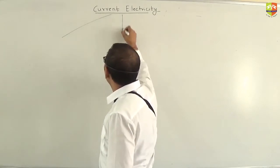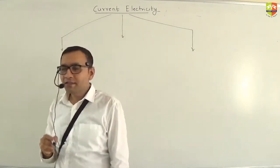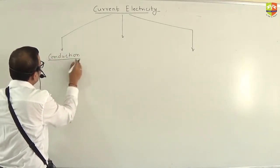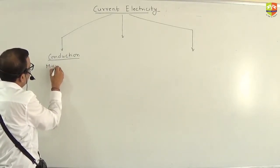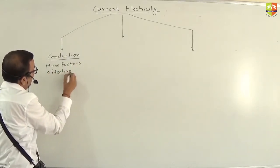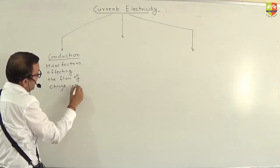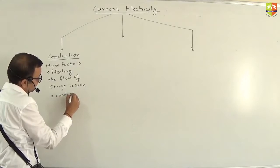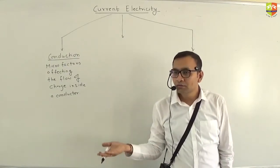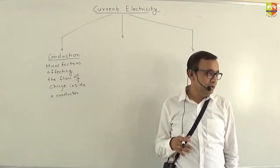This chapter can be divided into three segments. The first segment talks about conduction — here we will be taking care of micro factors affecting the flow of charge inside a conductor. What kind of charge flows inside a conductor? Electrons. The nucleus won't move here and there — it is free electrons in a conductor that move, and that is why it is called a conductor.